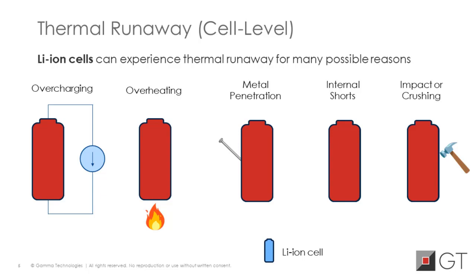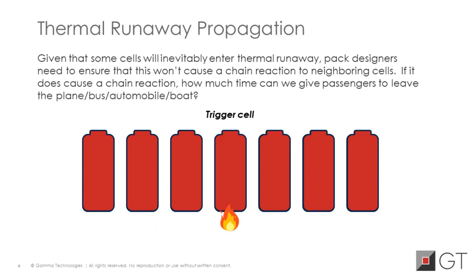There are many reasons behind thermal runaway — it can happen because of overcharging, overheating, nail penetration, internal short, or even impact and crushing. When designing a pack, we must inevitably assume that we will have a cell that enters thermal runaway, because sometimes there are reasons you can't control, and eventually the odds are that some cells in the field will enter thermal runaway. We want to make sure that if a cell enters thermal runaway, it won't cause a chain reaction heating neighboring cells to a runaway temperature, leading to a larger fire or even an explosion — or if that happens, how much time we have to warn the passengers.